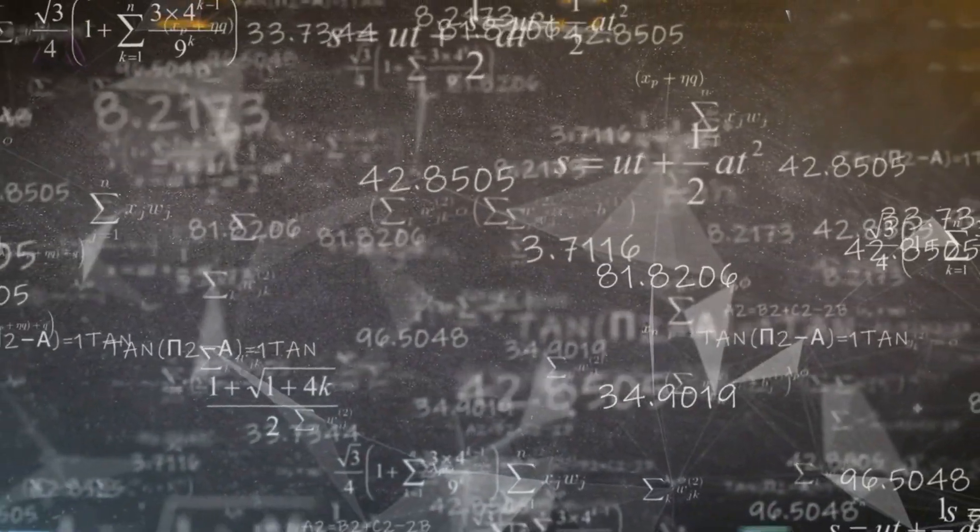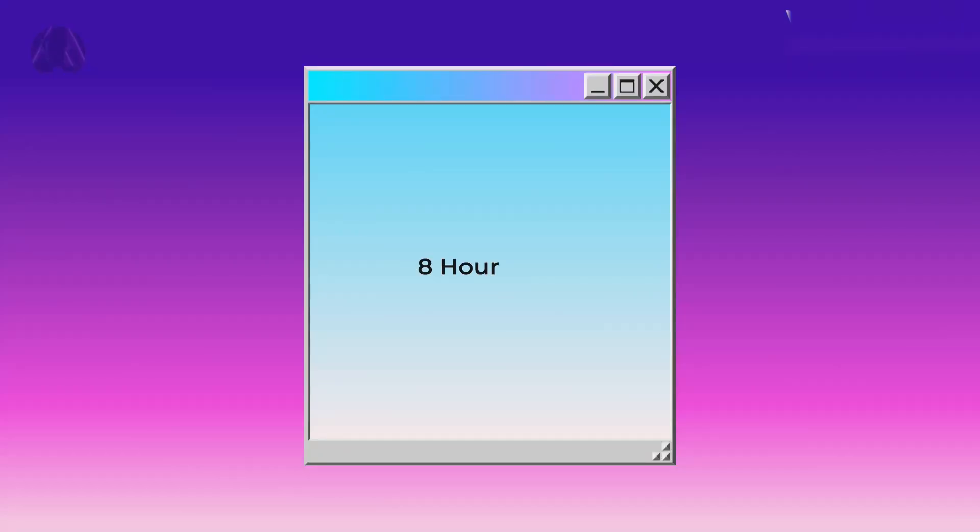For those who aren't skilled in mathematics, I want to do a simple breakdown. Now, a typical work day is 8 hours a day, with 5 days a week being the typical work week. Given that there are 24 hours in a day, and the average person sleeps about 8 hours a night, it leaves us with 16 hours left. The average work day is 8 hours.